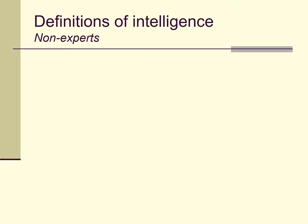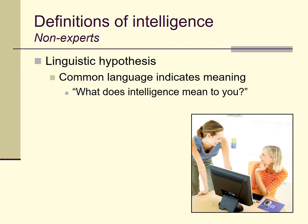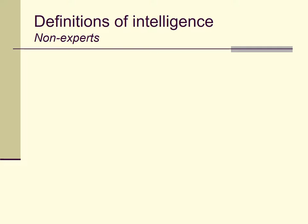This isn't a trivial exercise. As a general point, we can talk about the so-called linguistic hypothesis — that common language should indicate meaning, and thus if we want to know what something means, it makes sense to ask people generally. The linguistic hypothesis is much used in the area of personality testing. Rather than come up with a formal definition of what neuroticism means, we can instead rely on natural language to indicate the things that go along with neuroticism.